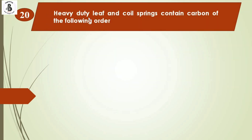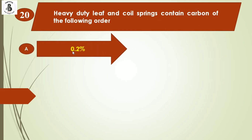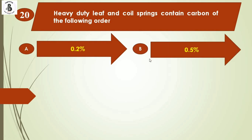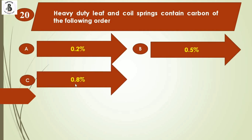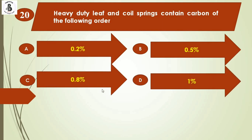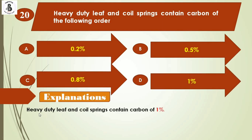Question 20: Heavy duty leaf and coil springs contain carbon of which order? Heavy duty leaf and coil springs contain around 1% carbon, placing them in the category of hypereutectoid steel. The right answer is Option D.